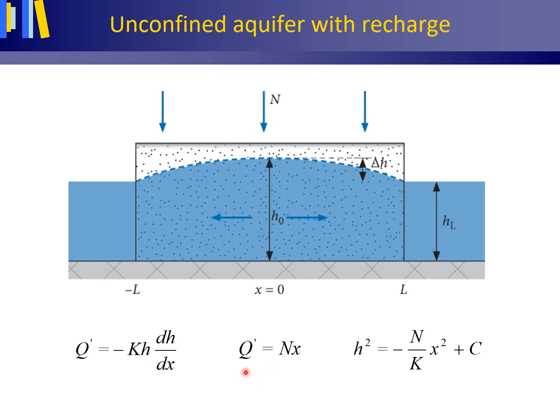Q-prime equals N times x, where N is the recharge rate or precipitation surplus in meters per day, and x is the horizontal distance in meters. So both the horizontal Q-prime and Nx are in square meters per day. This delivers the following equation for the potentiometric surface.